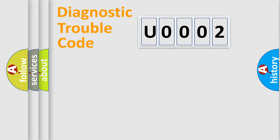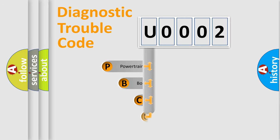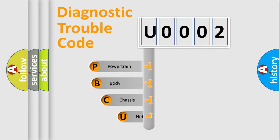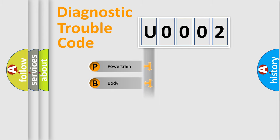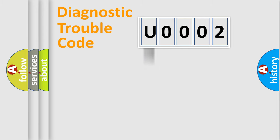Let's do this. First, let's look at the history of diagnostic fault code composition according to the OBD2 protocol, which is unified for all automakers since 2000. We divide the electric system of an automobile into four basic units: powertrain, body, chassis, and network.